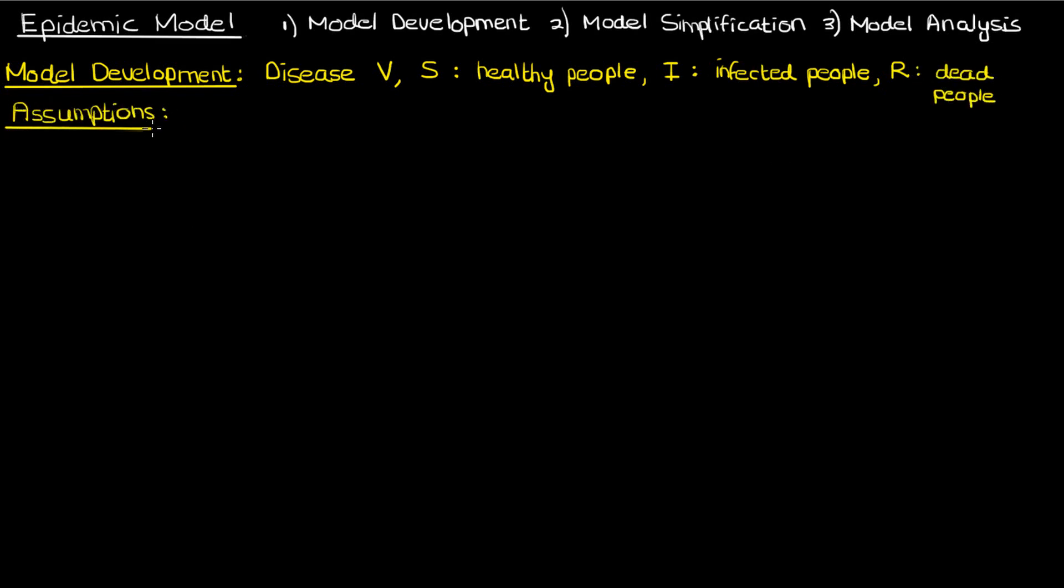We'll assume that aside from the change in the population because of death from this infectious disease, there are no other changes in the population. There are no massive changes in birth rate, no deaths from other causes, and no one coming into or going out of the country. So basically a static population in a country with fully closed borders that only changes as a result of this disease.